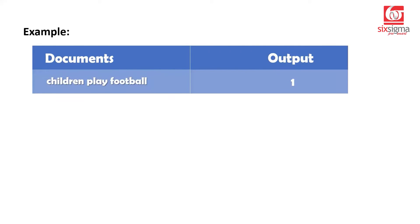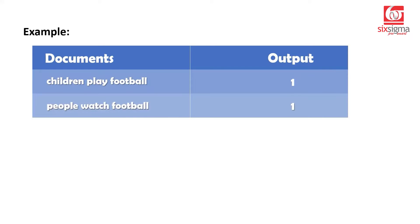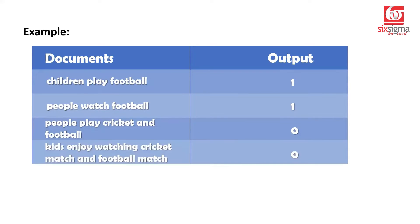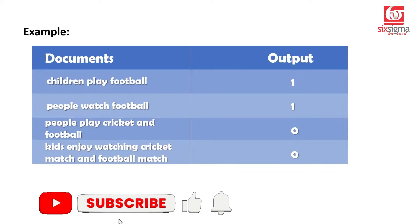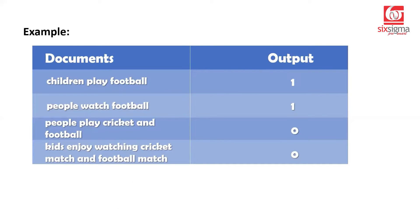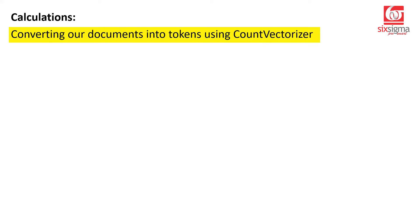We have four sentences: 'children play football,' 'people watch football,' 'people play cricket and football,' and 'kids enjoy watching cricket match and football match.' You may relate documents to some output — for instance, classifying social media posts or customer feedback as positive, negative, or neutral. We'll focus primarily on the documents column. To put this into structured form, we first convert documents to tokens using count vectorizer, which works internally in the background before TF-IDF is applied.